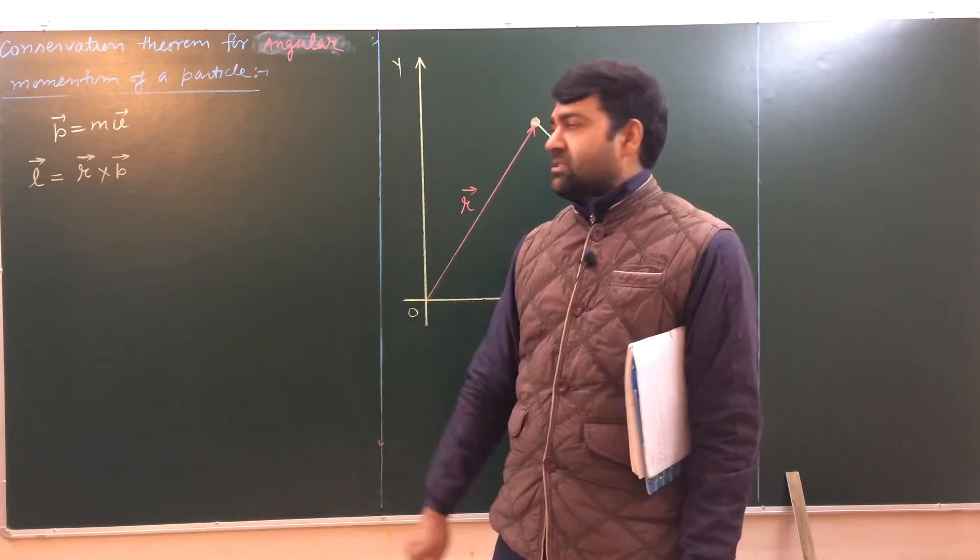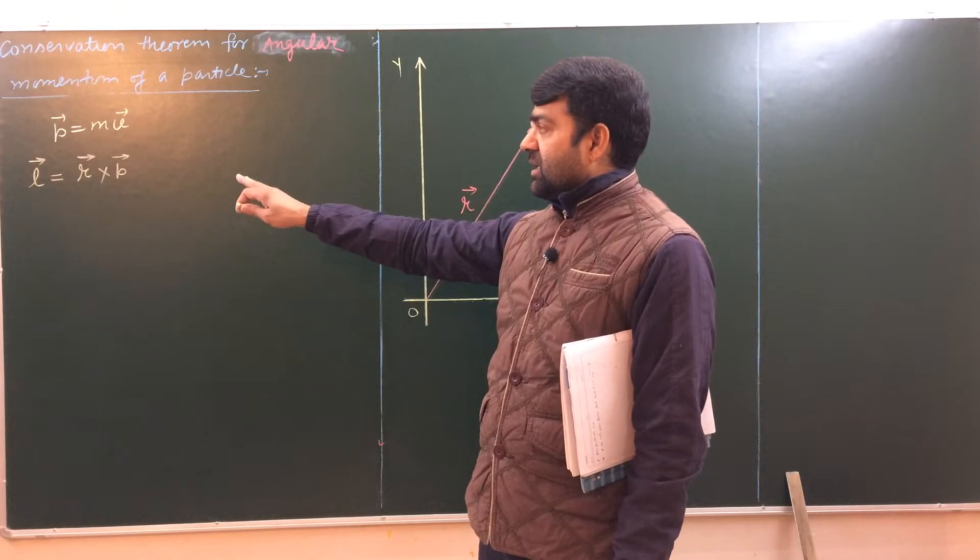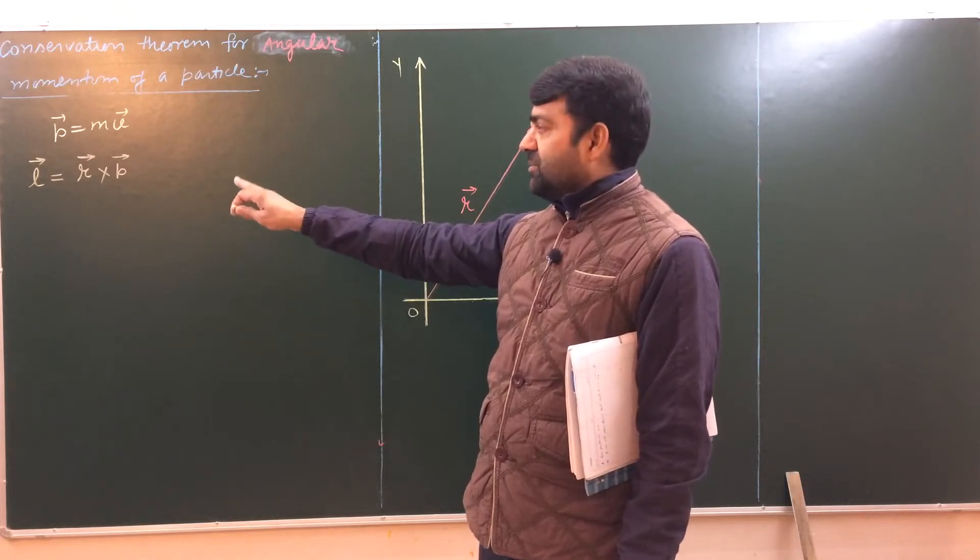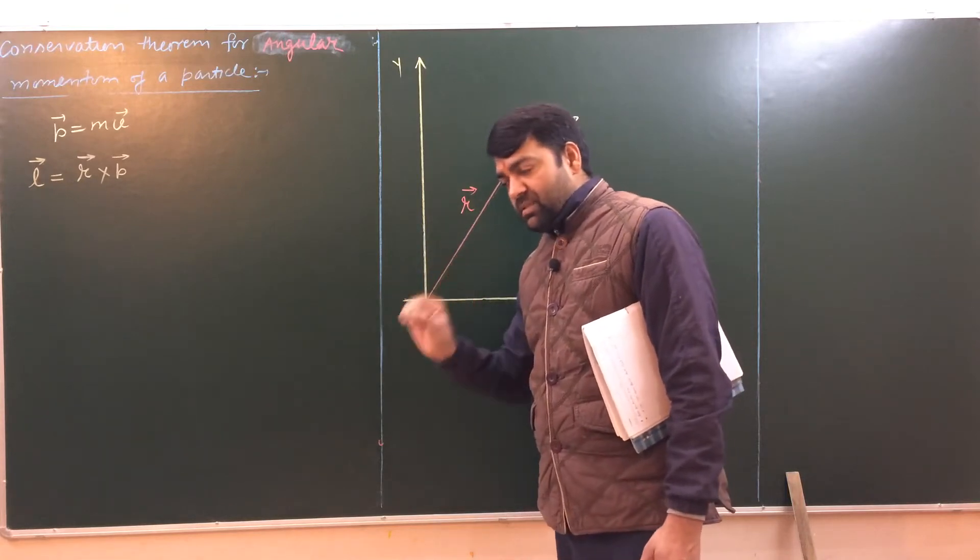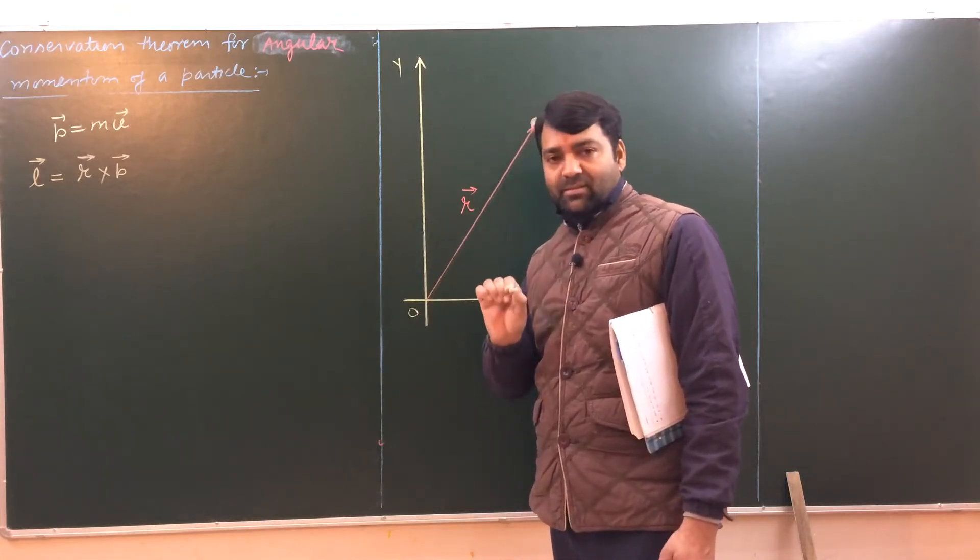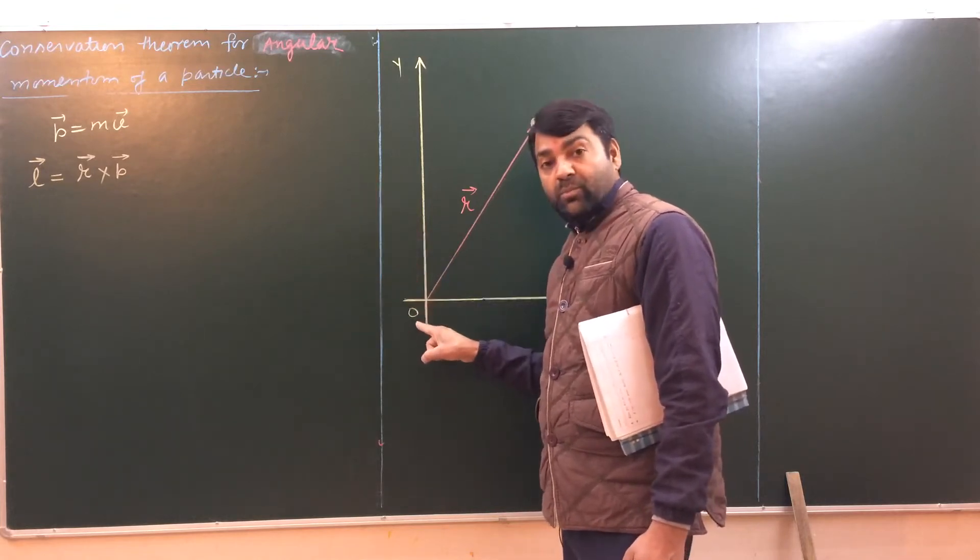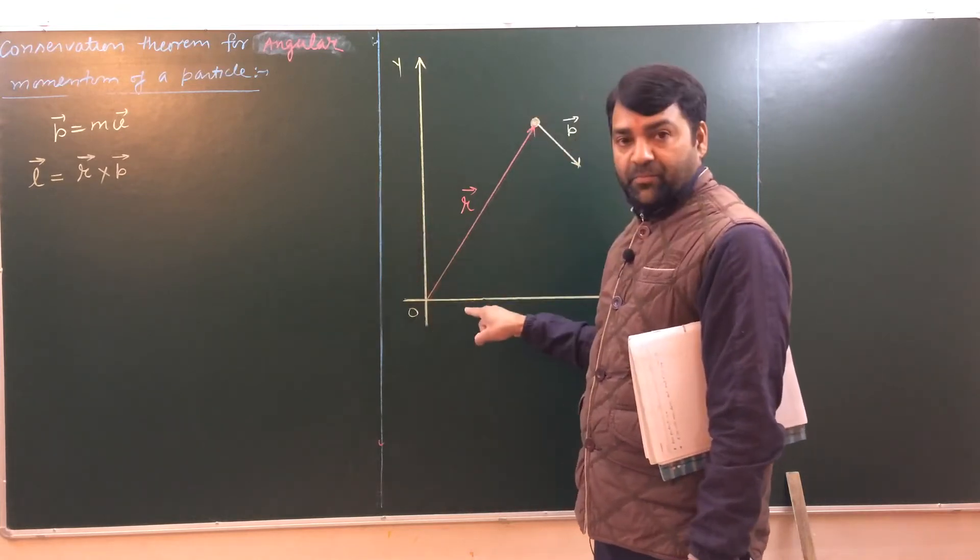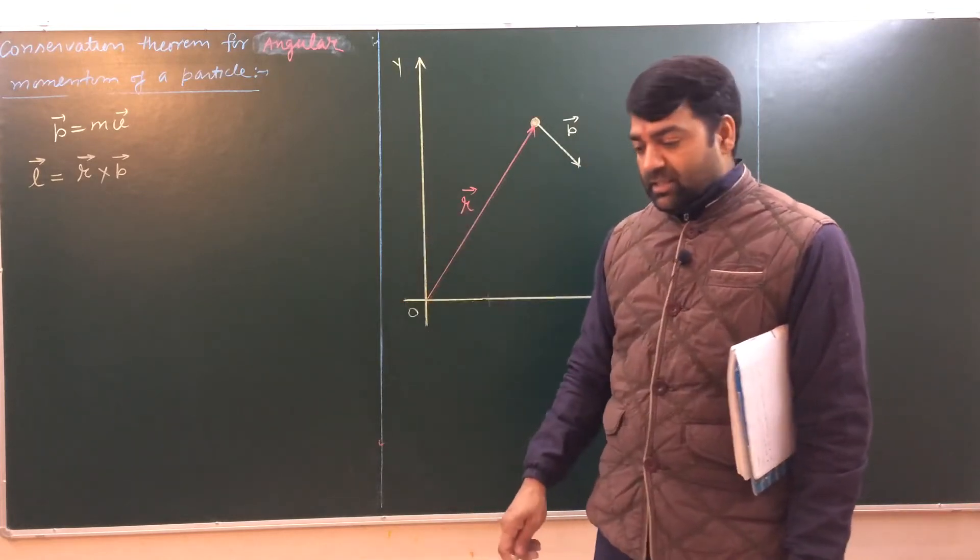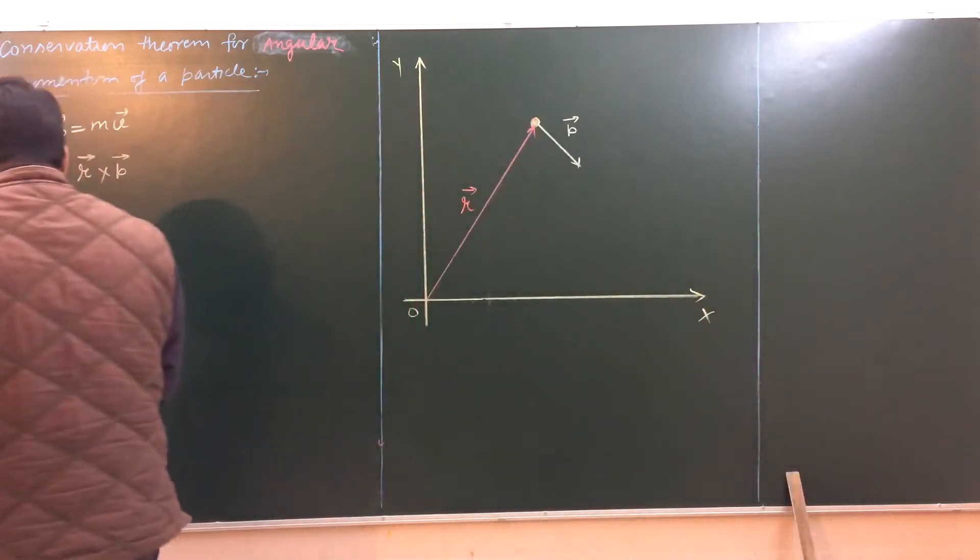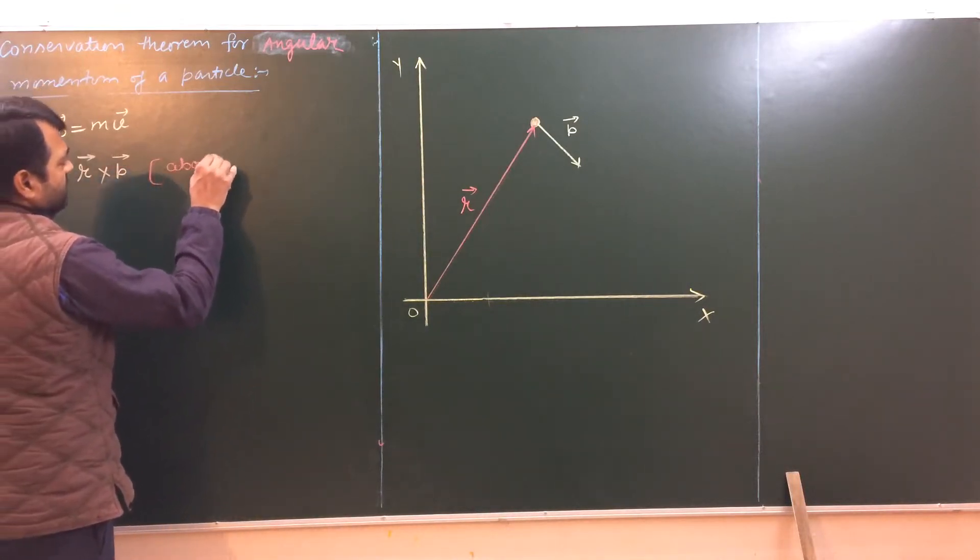Then we will go to the mechanics of a system of particles. l is r cross p, r is the position vector, p is the linear momentum, r is the position vector from point o. We must have to mention this, that this l is about this point o. Because if this o is different, if I have taken o at this point, then our l will be different. So I have to mention this point here about o.